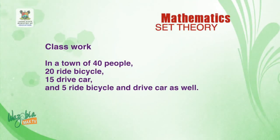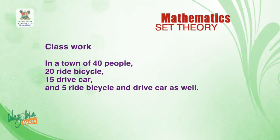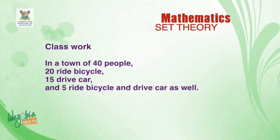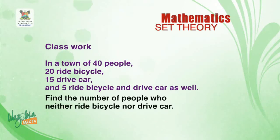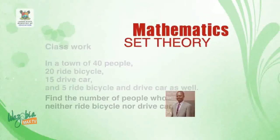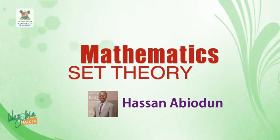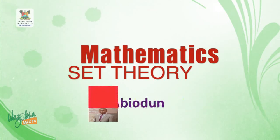Before I go, here is a classwork question: In a town of 40 people, 20 ride bicycle, 15 drive car, and 5 ride bicycle and drive car as well. Find the number of people who neither ride bicycle nor drive car. Thank you very much and God bless you.